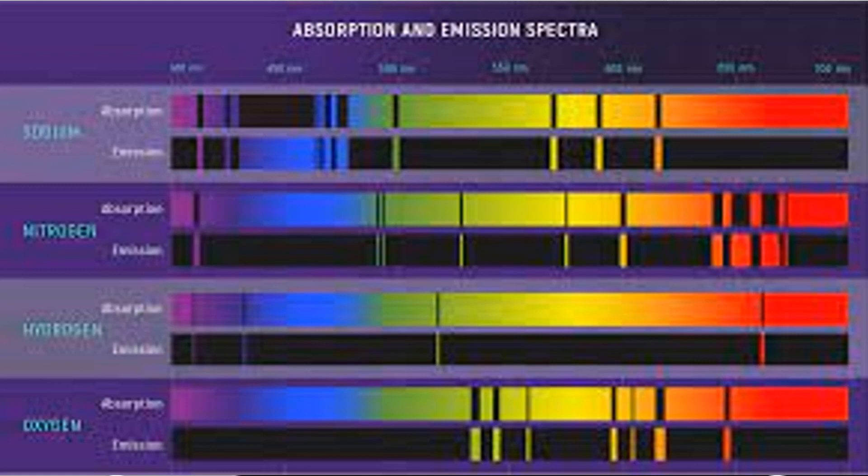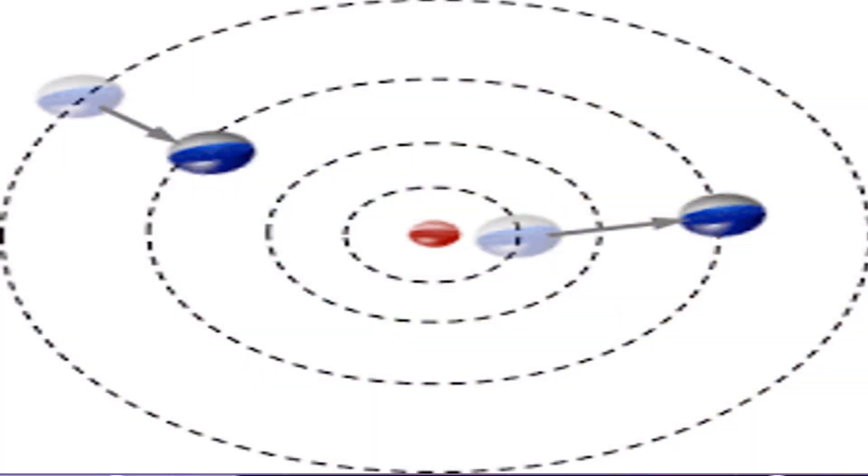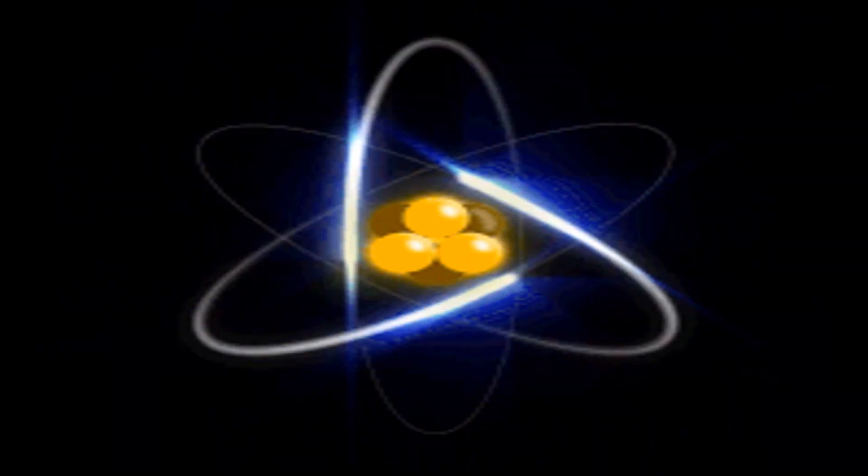How the electron jumps from one energy level to another without going through the other energy levels is very mysterious. But of course, one is told to accept mystery as part of quantum mechanics.